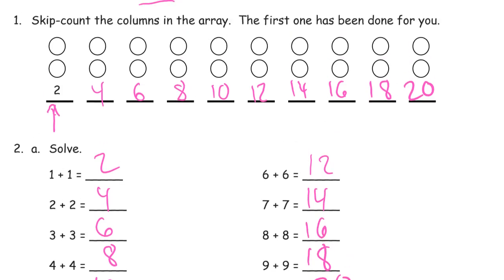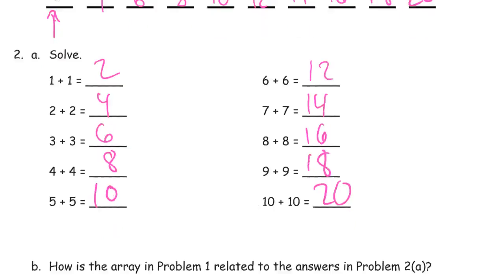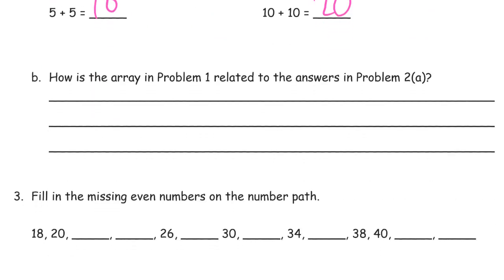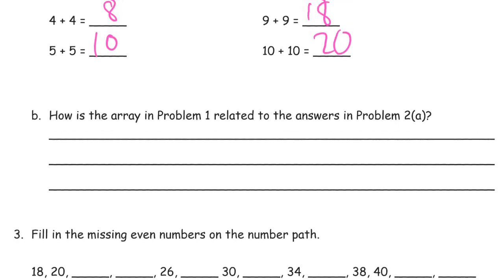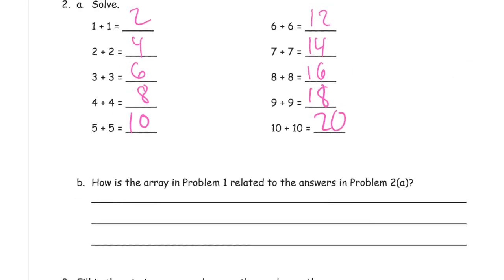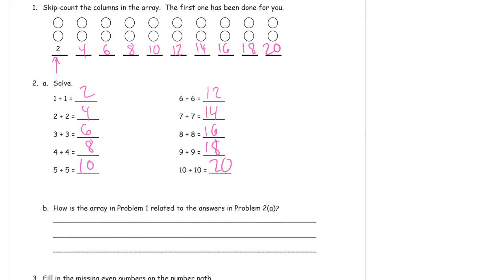What do you notice between that first problem and the second problem? How is the array in problem 1 related to the answers in problem 2a? Now let's zoom out so we can see them both at the same time. There's a lot of different ways that you can describe this. And so there's a lot of different right answers. There's not just one thing to notice. But how is it related? So what that means is, how is this array, what do you notice? How are these answers, what do they have to do with the array? What do you see that's the same?